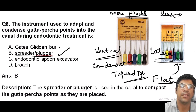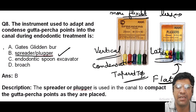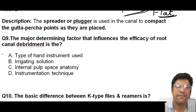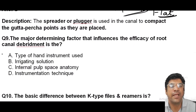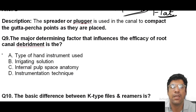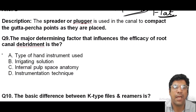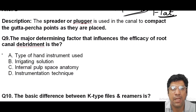The major determining factor influencing the efficacy of root canal debridement is the internal pulp space anatomy. The type of hand instrument plays a role but is not the major determining factor — the anatomy of the internal pulp space ultimately determines efficacy. In cases with complex and curved canals, you might use specialized instruments like K-files or H-files, but the effectiveness of cleaning and shaping still depends on the internal anatomy.